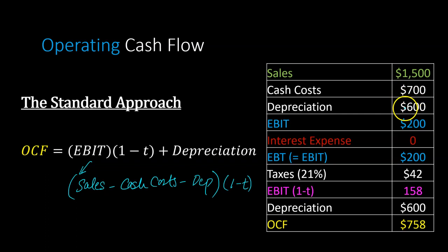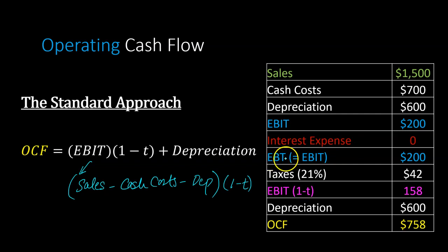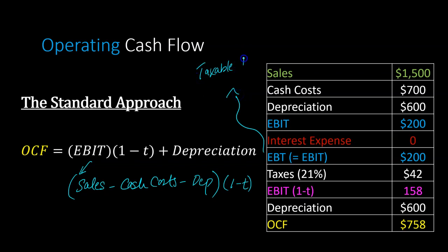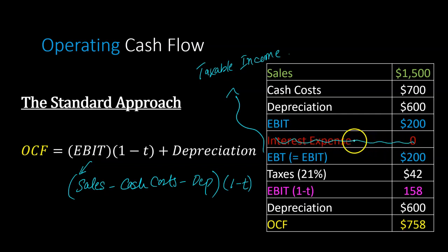Here is an important point. When we think about income statements, once you arrive at earnings before interest and taxes, typically you have some interest expense which you deduct to get earnings before taxes — also known as taxable income. This is the income on which you're going to be paying taxes. However, whenever we are calculating financial cash flows, we ignore interest expense. That does not necessarily mean interest expense is, in fact, zero.